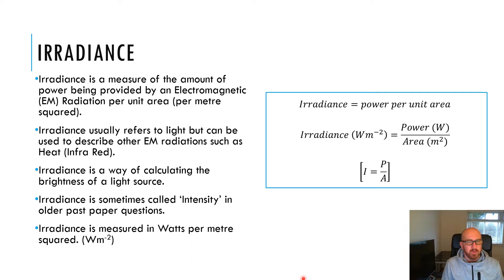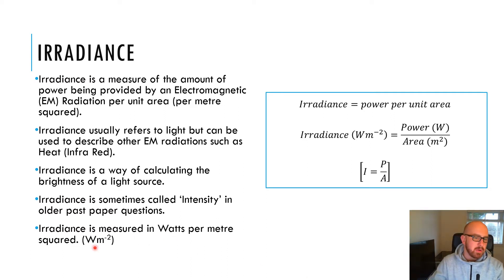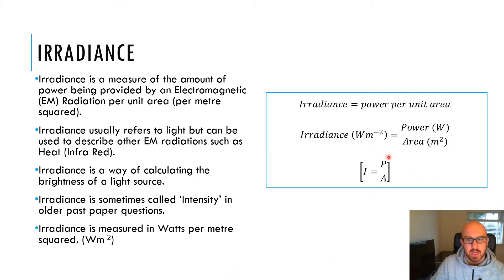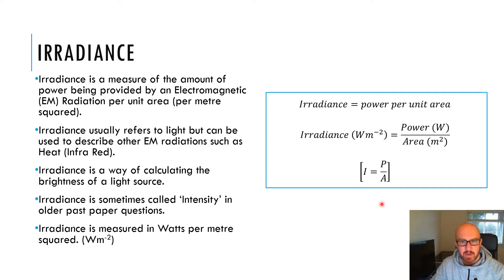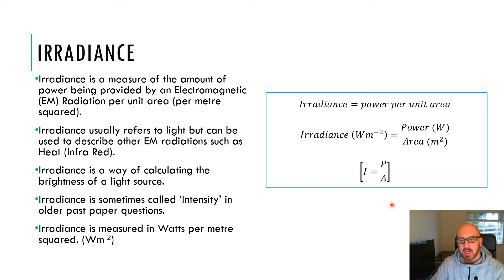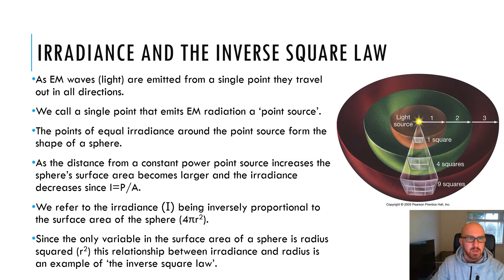Irradiance is measured in watts per meter squared — make sure you remember the negative two exponent because the area is underneath the fraction. The formula, which you'll get on your formula sheet, is I = P/A: irradiance equals power over surface area. We'll come back to questions on that a bit later and talk about different applications and types of light sources.